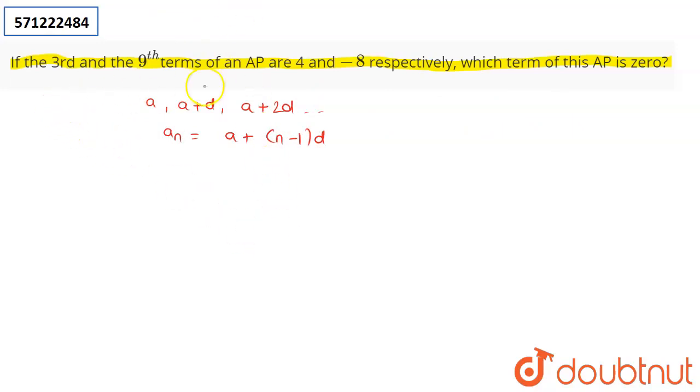We are given that third and ninth terms are 4 and -8. So what will be the third term? Put n equals 3, so it becomes a + 2d equals 4. Mark this as the first equation.